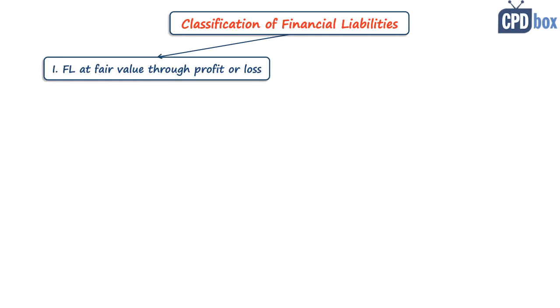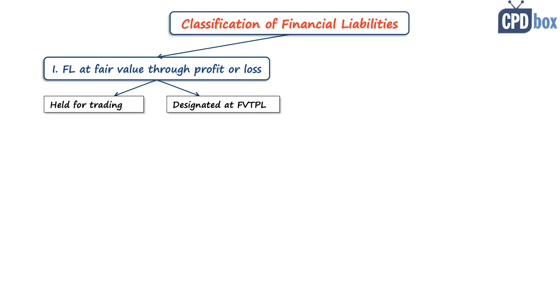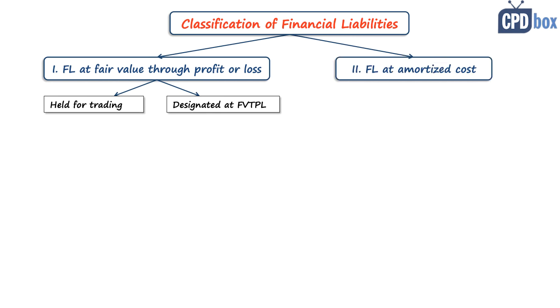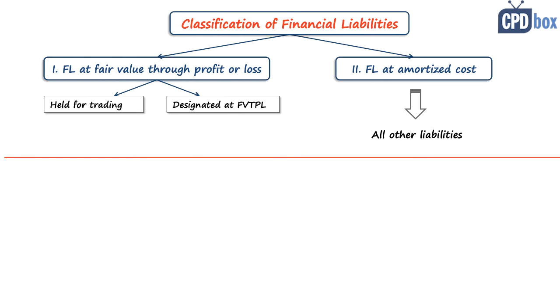Now let's look at classification of financial liabilities. IFRS 9 classifies financial liabilities into two categories. The first is financial liabilities at fair value through profit or loss, which has two subcategories: those held for trading, and those designated on initial recognition to be measured at fair value through profit or loss. The second category is liabilities at amortized cost, where all other liabilities fall.